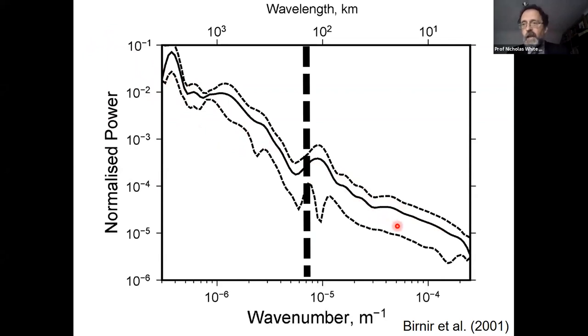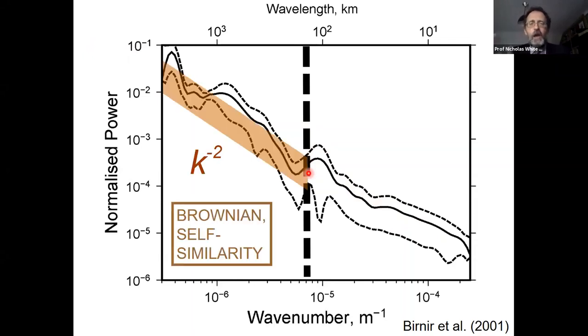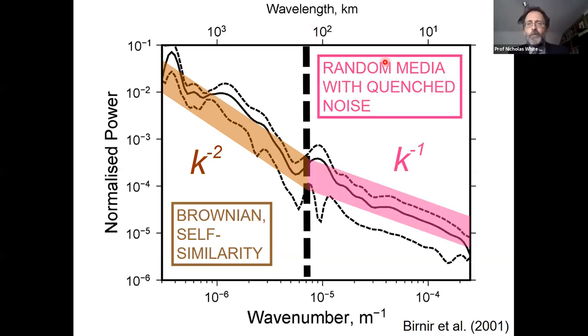If you stack many river spectra together and look at the average behavior, you can see the red slope. It looks like k to the minus two, but it's not quite perfectly k to the minus two. There's actually a change in slope at the dashed line. On one side, at the smallest wave numbers or longest wavelengths, we have k to the minus two, red noise, confusingly sometimes referred to as Brownian noise.